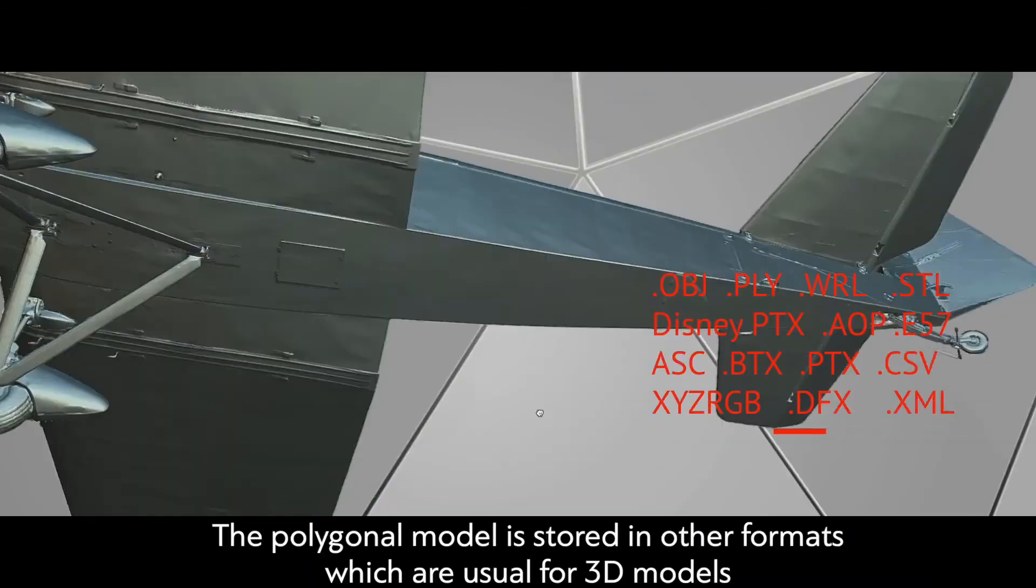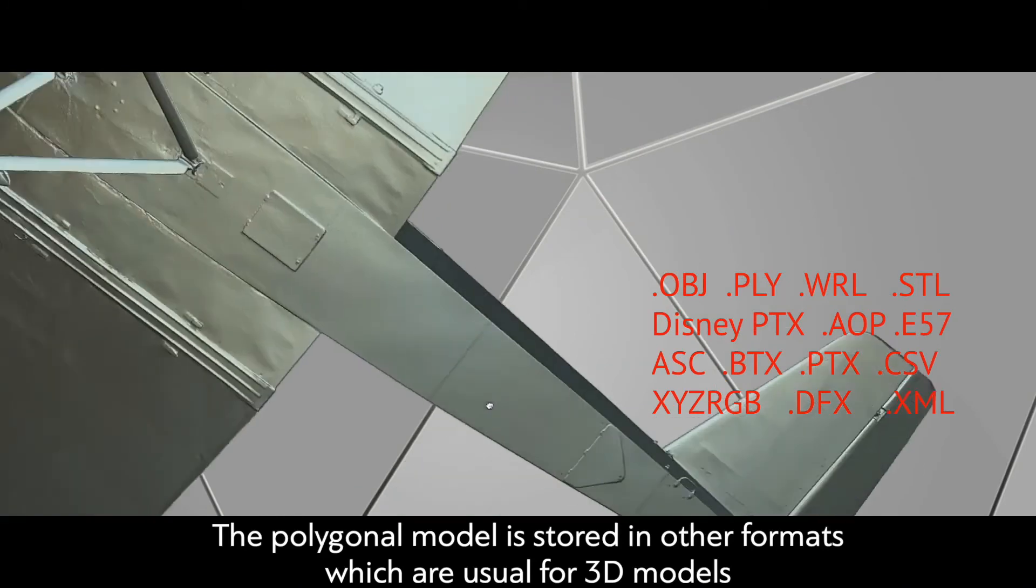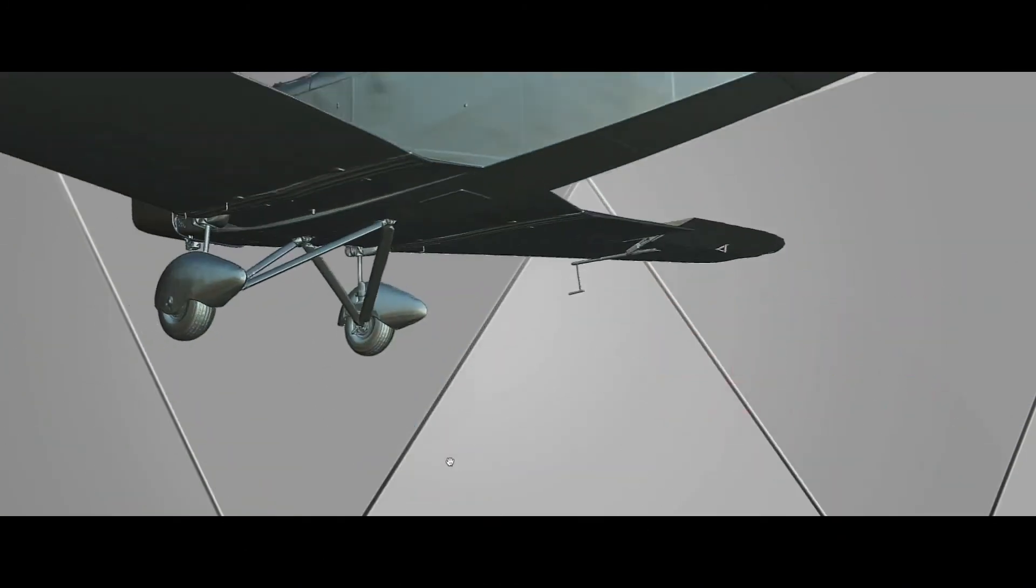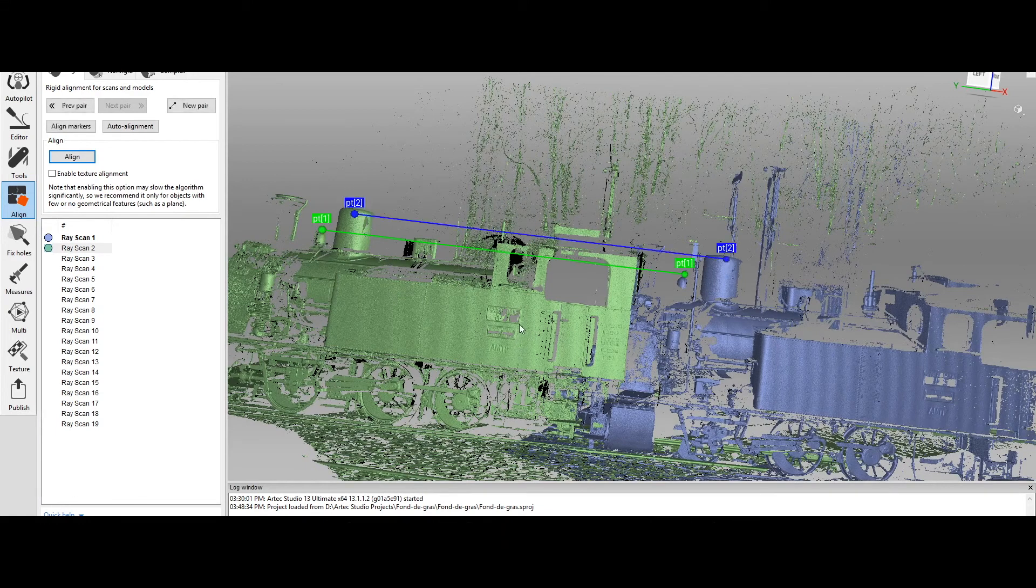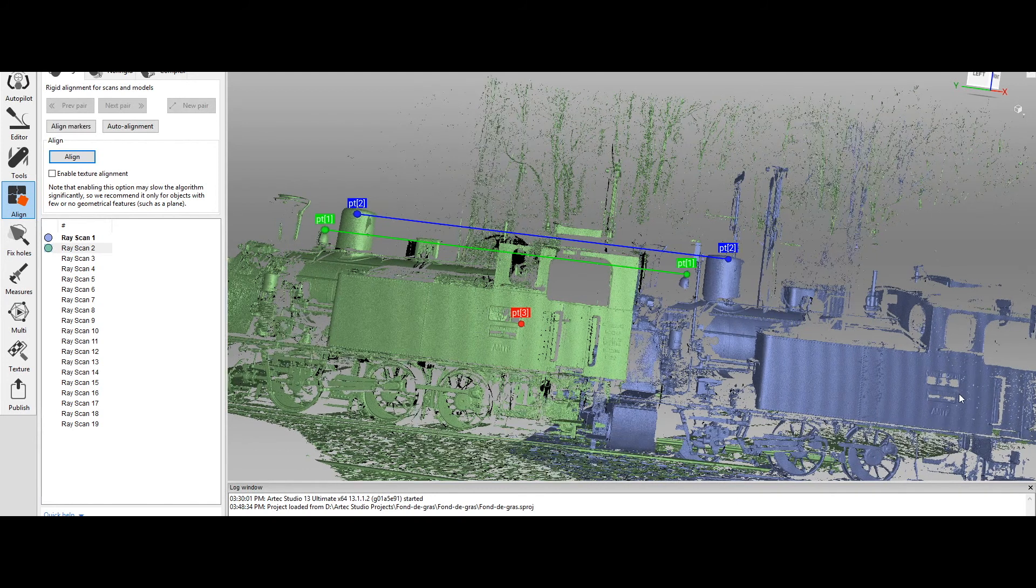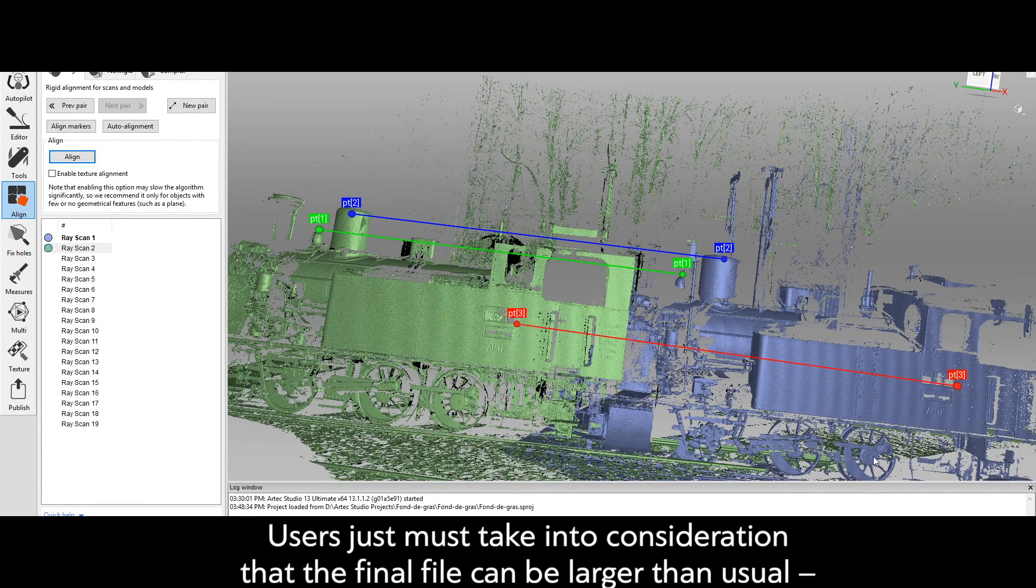The polygonal model is stored in other formats, which are usual for 3D models. The post-production process for Artecray is the same as for other Artec scanners. Users must take into consideration that the final file can be larger than usual.